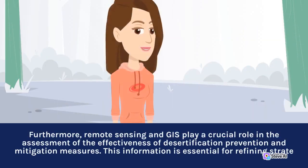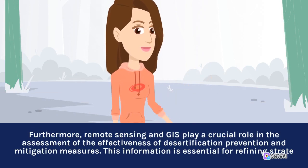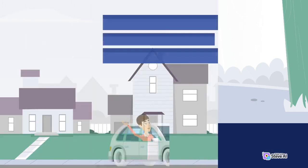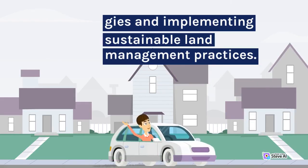Furthermore, remote sensing and GIS play a crucial role in the assessment of the effectiveness of desertification prevention and mitigation measures. This information is essential for refining strategies and implementing sustainable land management practices.